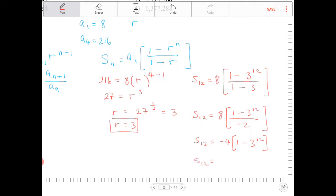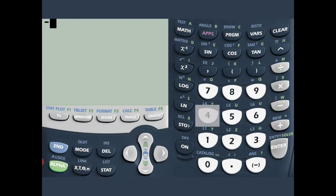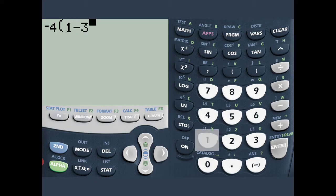so negative 4, and clear whatever I have. Negative 4, 1 minus 3 to the 12th, and let's press enter.